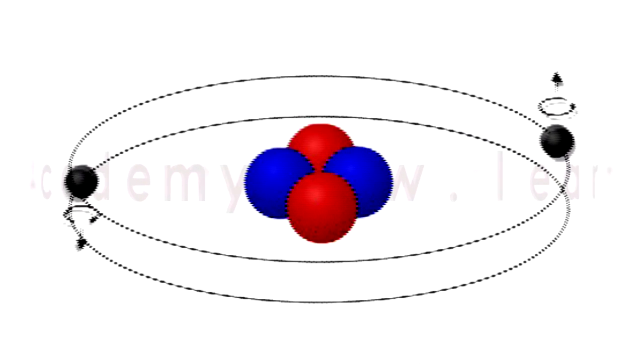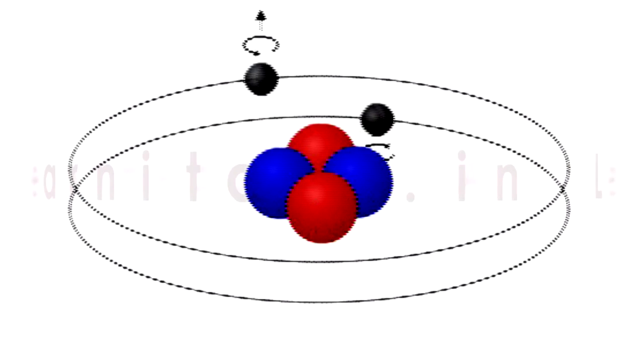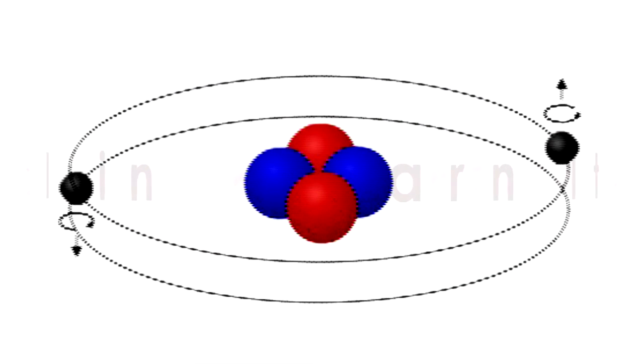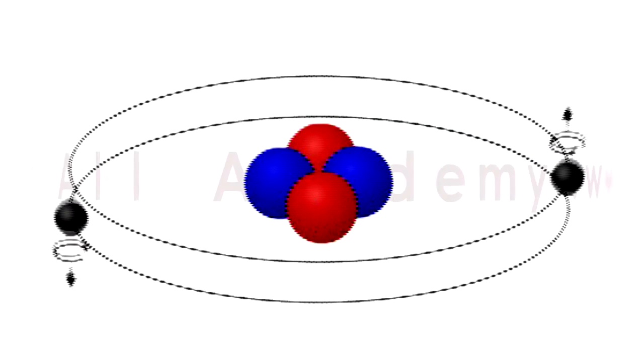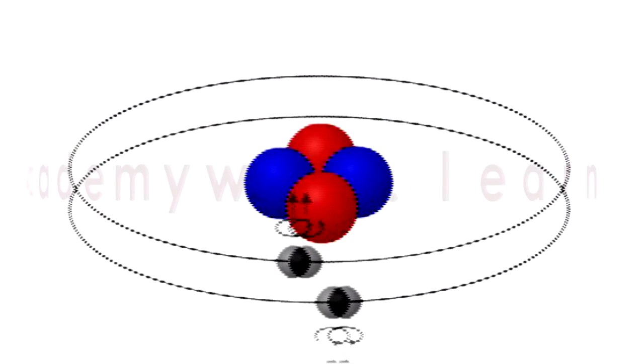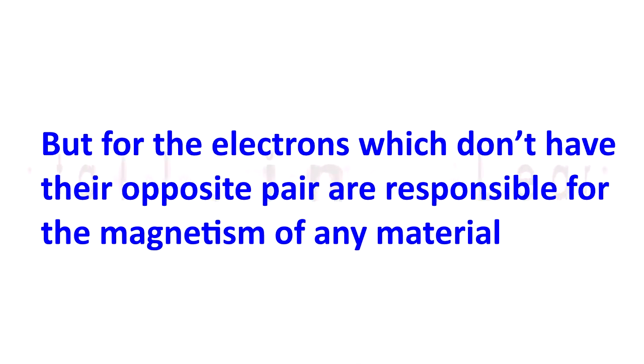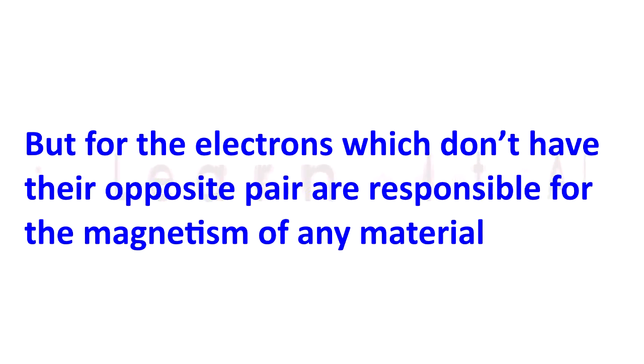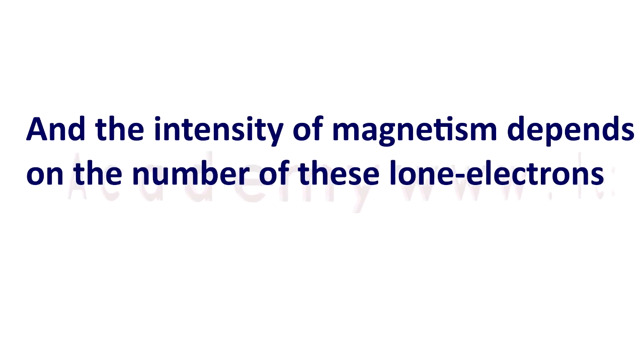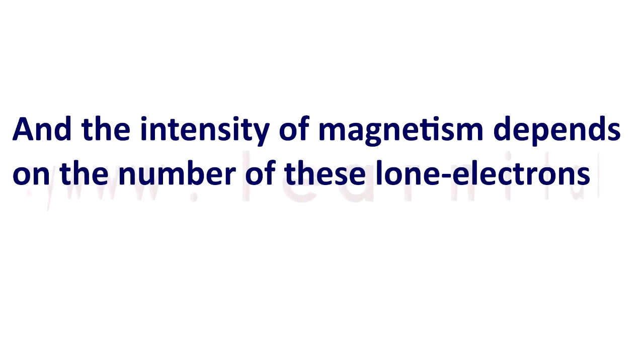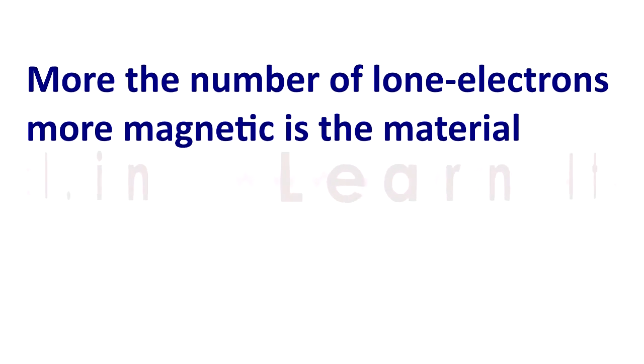In any atom, the electrons can rotate in both clockwise and anticlockwise direction on its axis while orbiting the nucleus. Now in some specific orbit, if two electrons rotating in opposite direction with each other are present, then they cancel the magnetic effect of each other. But the electrons which don't have their opposite pair are responsible for the magnetism of any material. And the intensity of magnetism depends upon the number of these lone electrons. More the number of lone electrons, more magnetic is the material.